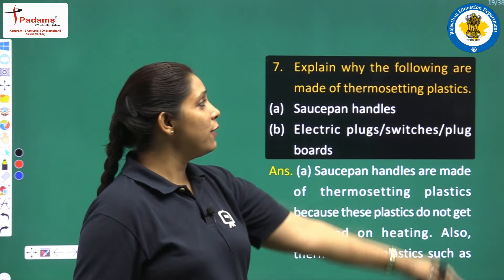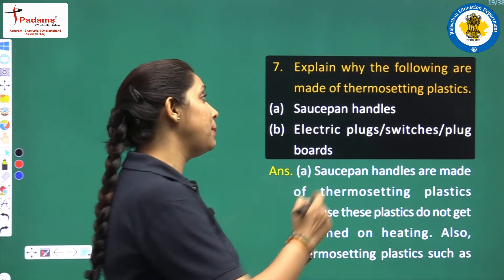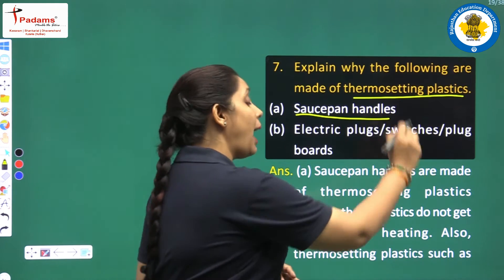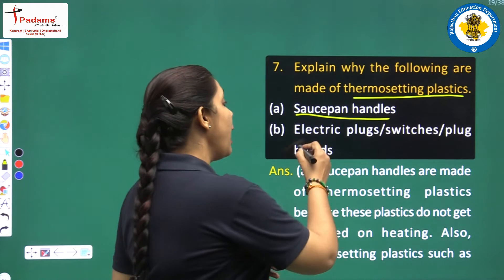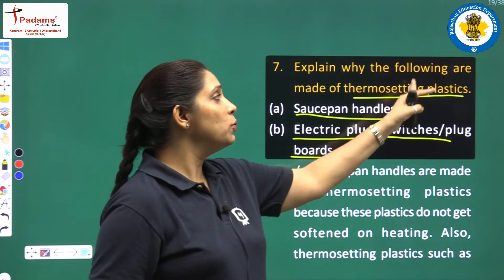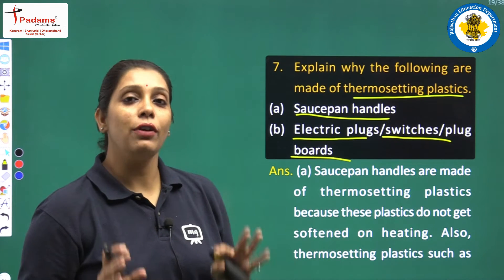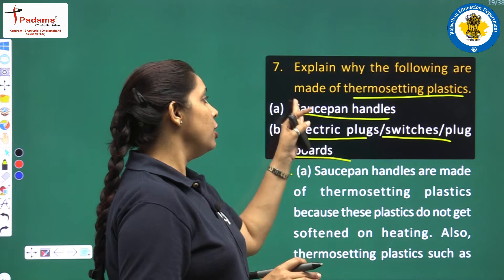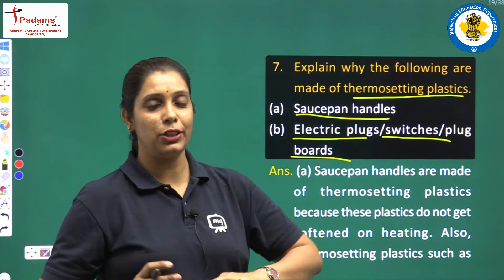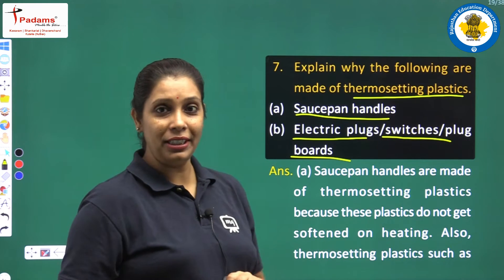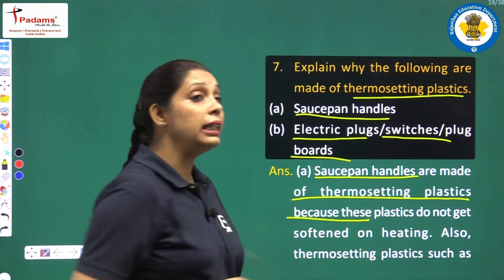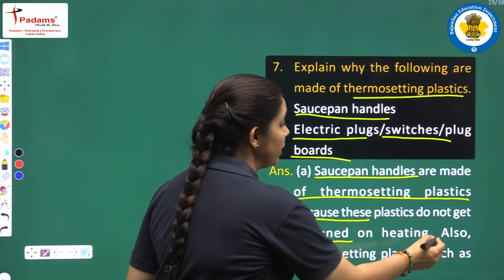Next question is: explain why the following are made of thermosetting plastics. You have to give reasons why saucepan handles and electric plugs and plug boots are all made of thermosetting plastic. Saucepan handles are made of thermosetting plastics because these plastics do not get softened on heating.